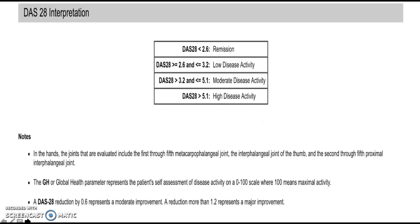A DAS28 reduction by 0.6 represents a moderate improvement, whereas a reduction of more than 1.2 represents a major improvement in the patient's health.